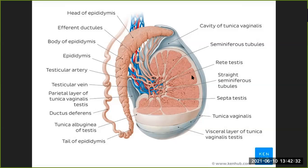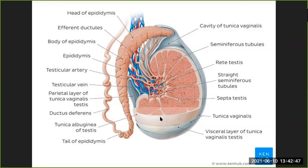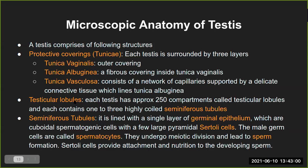To show you in the diagram: this is the section of the testis. The outermost layer is tunica vaginalis, then tunica albuginea — the off-white layer you see second — and inside this albuginea is your capillary network, which is called tunica vasculosa. These are the three protective coverings on the testis structure.